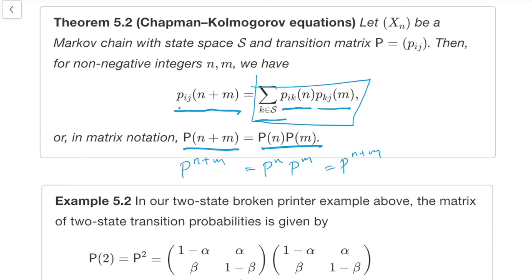So once we know about this matrix form, it's almost too obvious to even be worth saying. That's the Chapman-Kolmogorov equations. We will mention them again in the course.